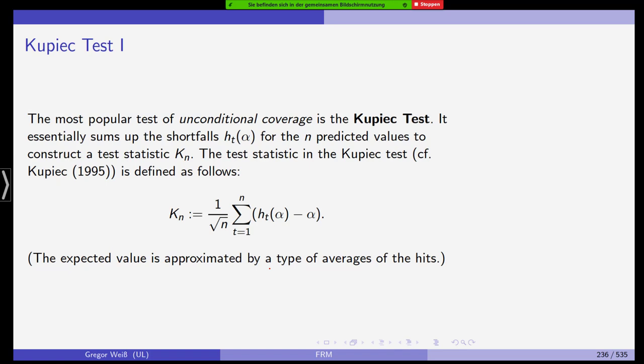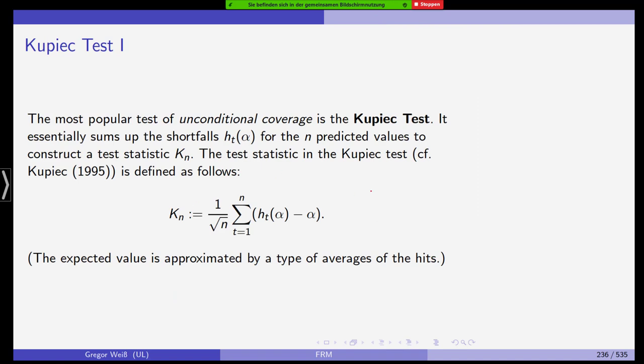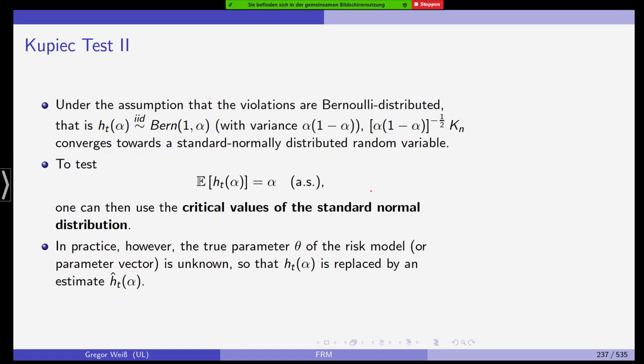The hypothesis that needs to be tested for unconditional coverage is simply the expected value of the hit function minus alpha, given the information until T-1, should be 0. If you have 100 days and alpha is 5%, then obviously we would expect 5 out of 100 days to have violations. So 5 over 100 is the expectation and if you subtract 5% then this should be 0 if the model is correct. The Cupids test simply sums up the hits H_T for the n predicted values and it constructs a test statistic K_m. It's K_m = sum of the H_Ts minus alpha divided by the square root of n, the number of days. The expected value is approximated by type of averages of the hits. If you assume the model to be correct then we would have a Bernoulli distributed test statistic. The critical values for hypothesis testing are standard normally distributed.